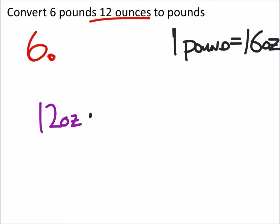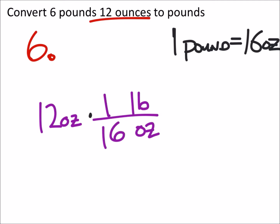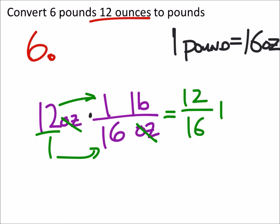Using dimensional analysis, we multiply by something over ounces — specifically pounds over ounces, because that's what we want. It's one pound for every 16 ounces, so the ounces cancel out. Not everyone would use this method for this particular problem, but you can. Making 12 a fraction: 12 times 1 is 12, and 1 times 16 is 16, and now this is in pounds.